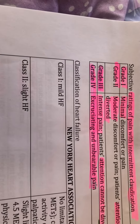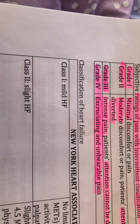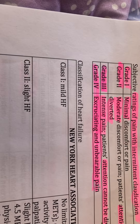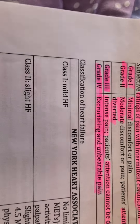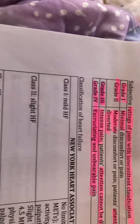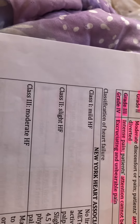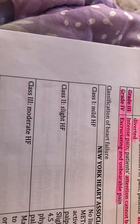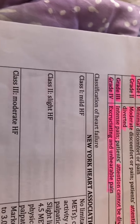Subjective rating of pain with intermittent claudication. Grade one: minimal discomfort or pain. Grade two: moderate. Grade three: intense. Grade four: excruciating and unbearable pain.